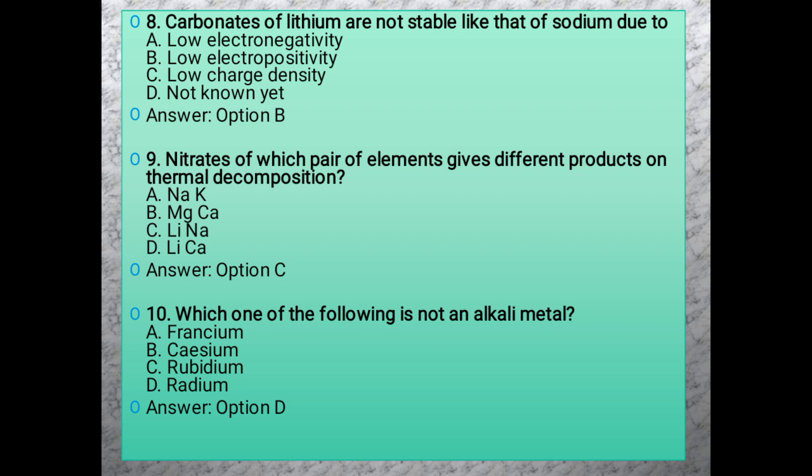Question 9: Nitrates of which pair of elements give different products on thermal decomposition? When we apply thermal decomposition to nitrates, different products can be formed. Lithium and sodium, both alkali metals, show these conditions differently. So the answer is option C, lithium and sodium, as these are first A group elements with different properties.